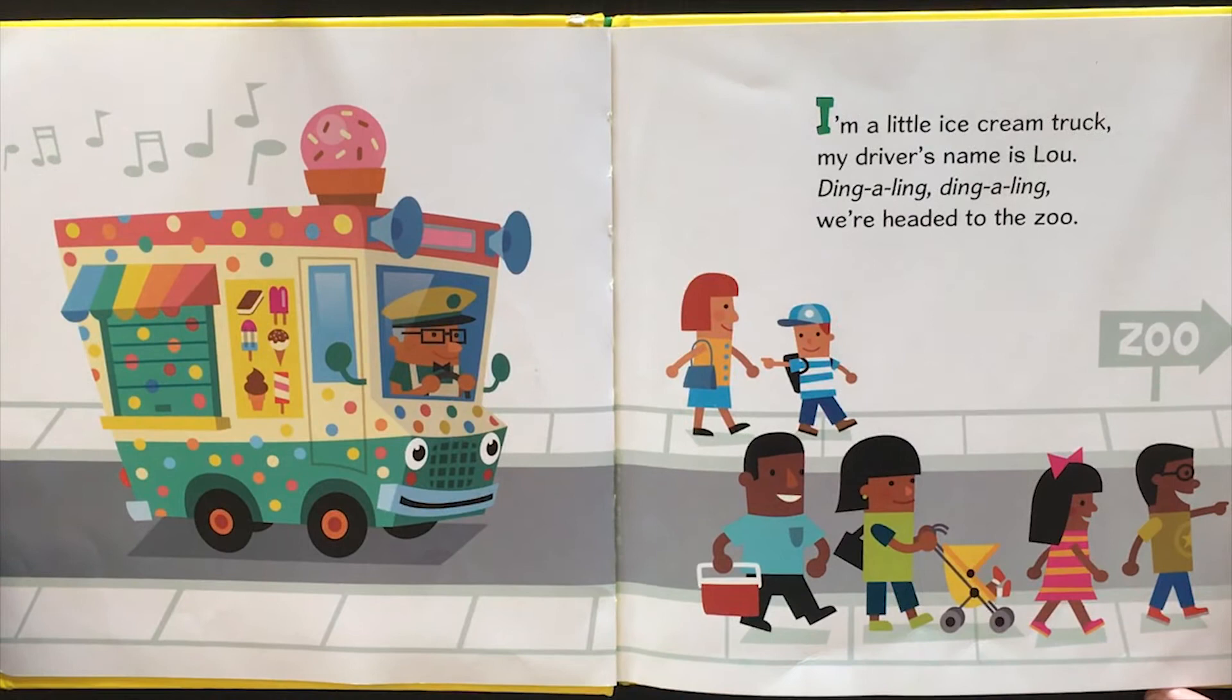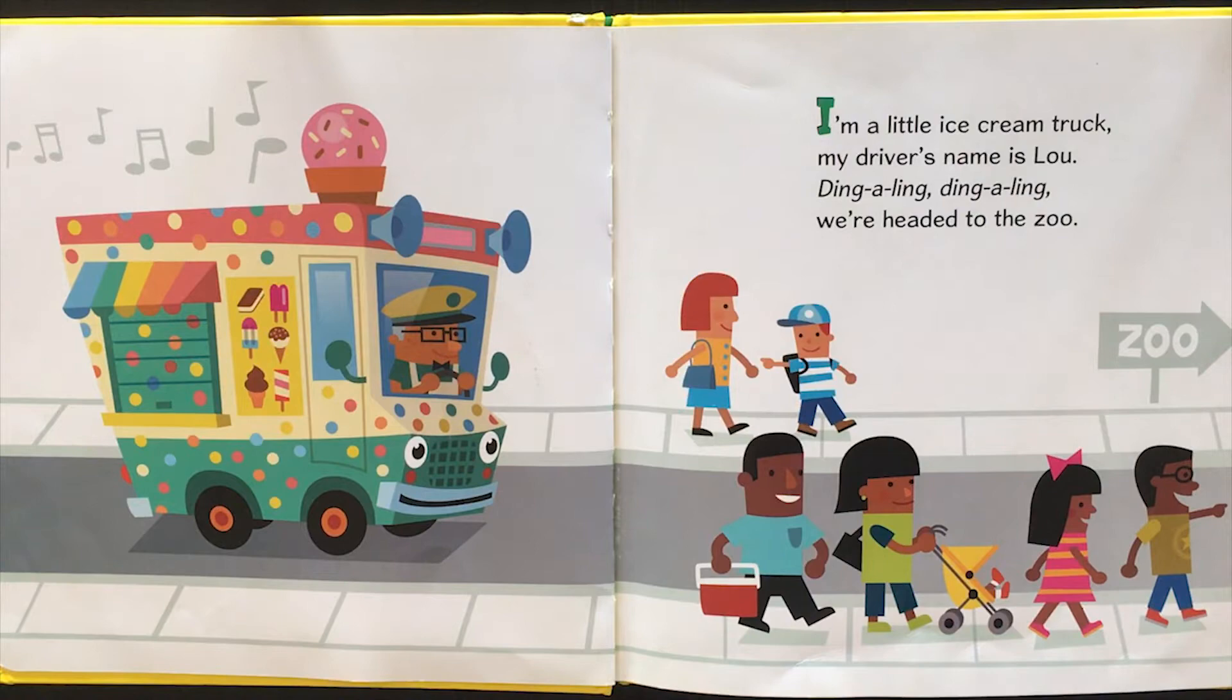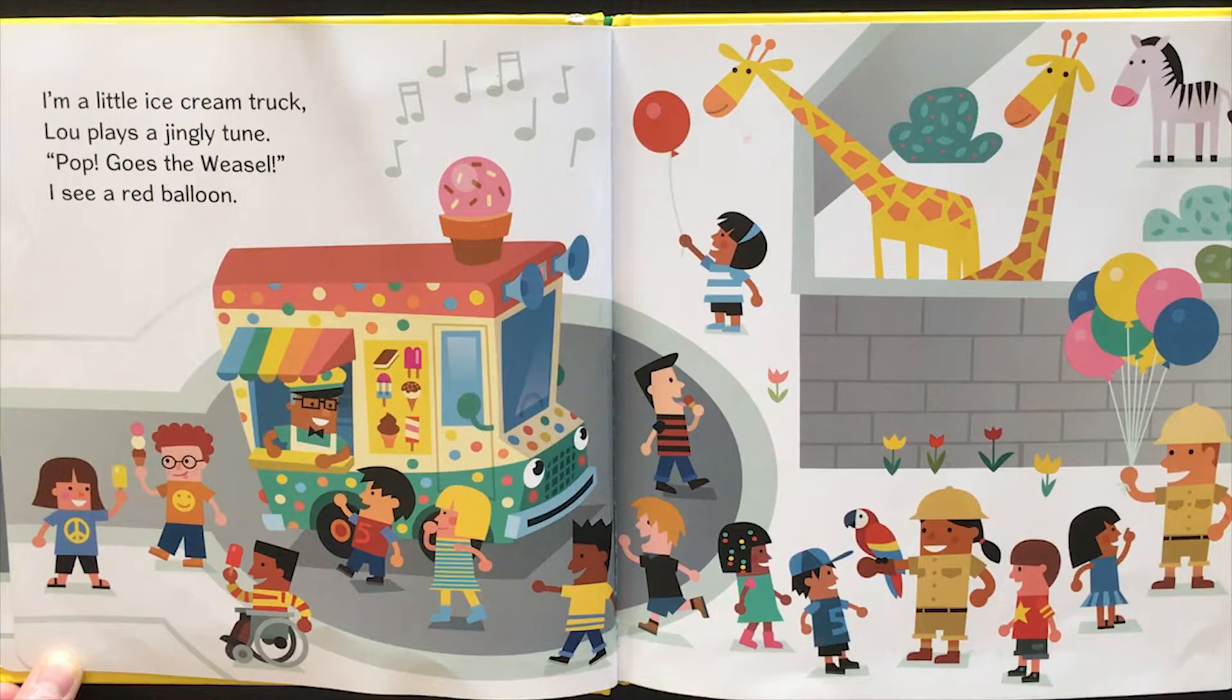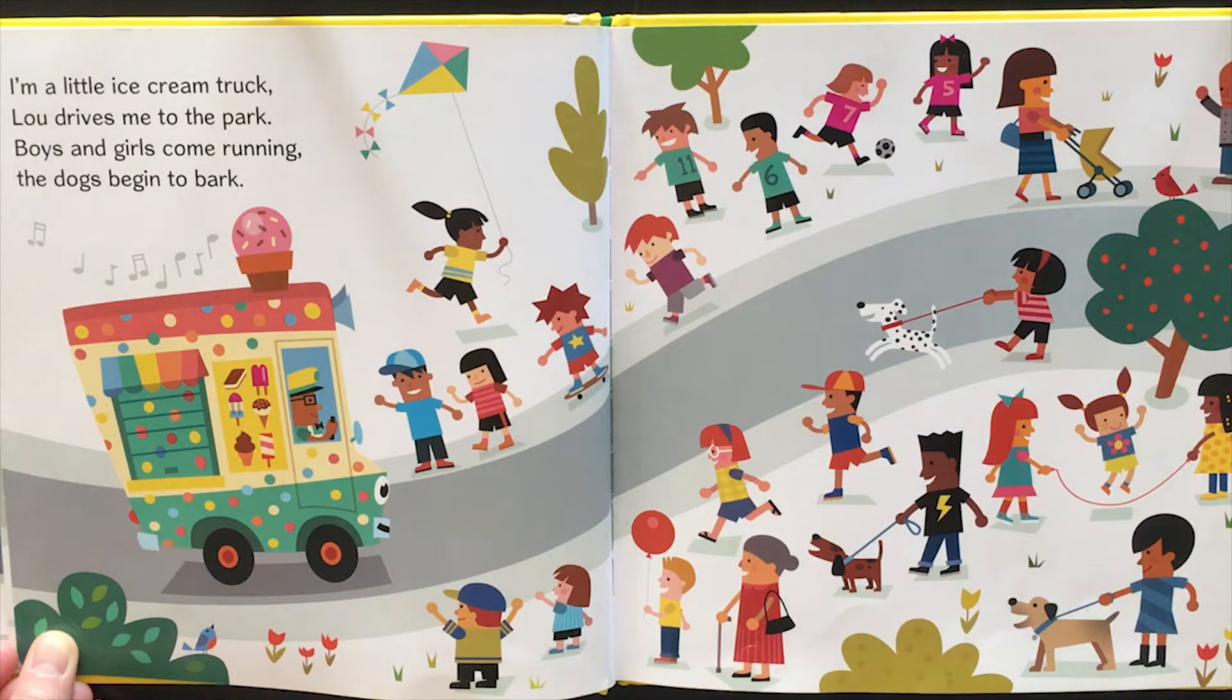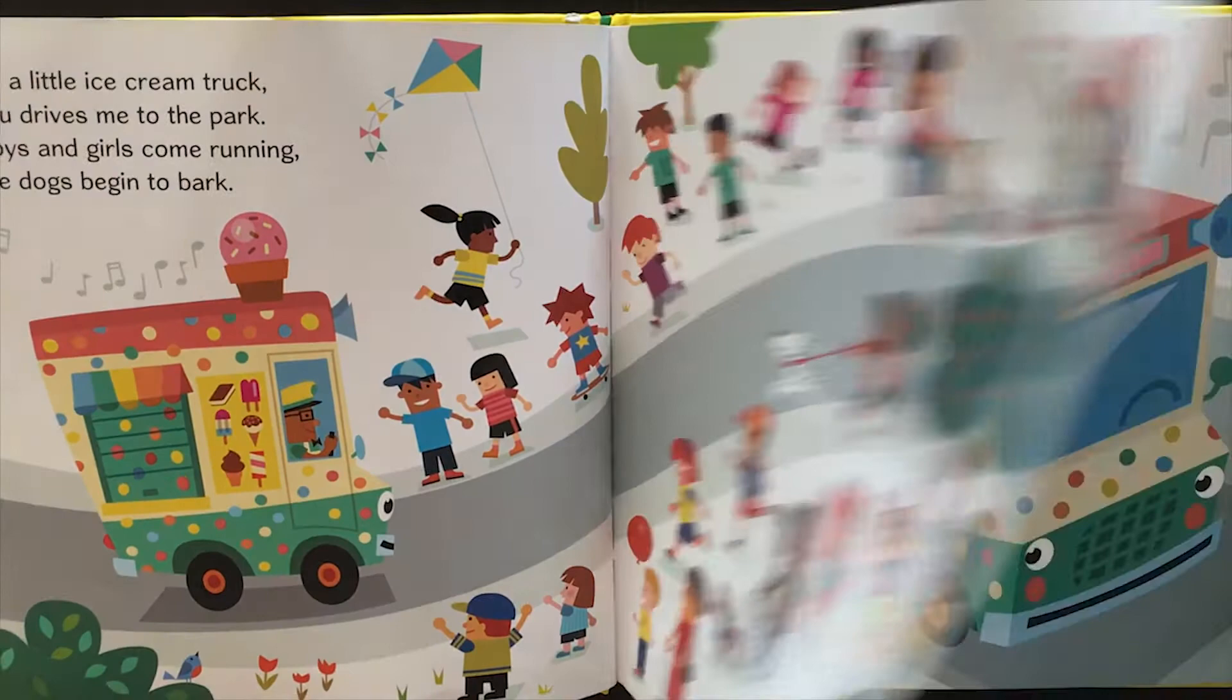I'm a little ice cream truck. My driver's name is Lou. Ding-a-ling, ding-a-ling, we're headed to the zoo. I'm a little ice cream truck. Lou plays a jingly tune. Pop! goes the weasel. I see a red balloon. I'm a little ice cream truck. Lou drives me to the park. Boys and girls come running. The dogs begin to bark.